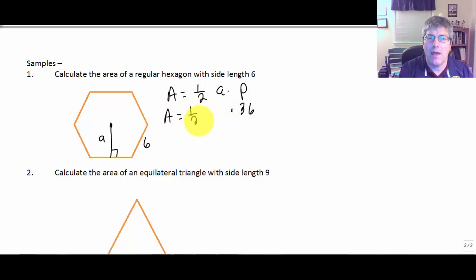And we know our perimeter is going to be 36. So, our area is going to be 1/2 A times P. We have to calculate that. I'll draw in a radius. Now, keep in mind my apothem is the perpendicular bisector of the side. Splits that 3 and 3. We get a 30-60-90 right triangle here.